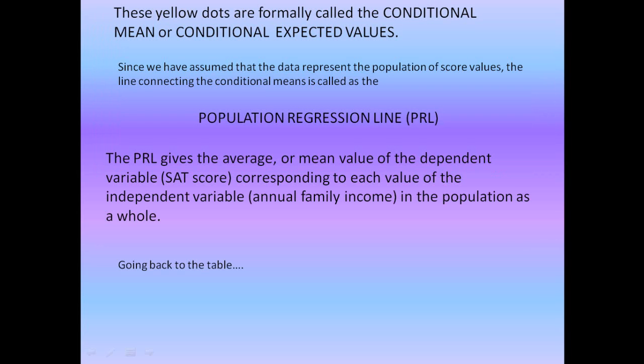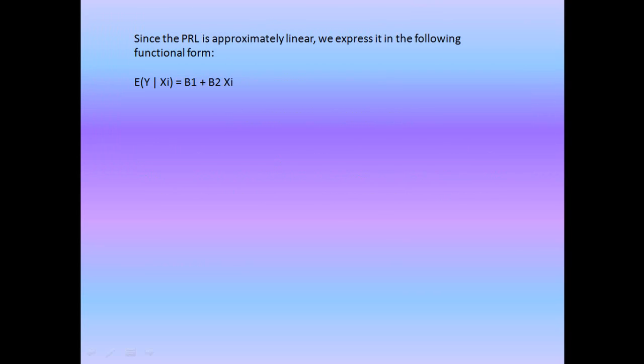We now need a mathematical form to express the PRL. Since PRL is approximately linear, we express it in the following functional form: expected value of y given xi is equal to b1 plus b2 xi. This is basically a mathematical equation of a straight line. Here E(Y | Xi) means the mean or expected value of y corresponding to or conditional upon a given value of x. The subscript i refers to the ith subpopulation.